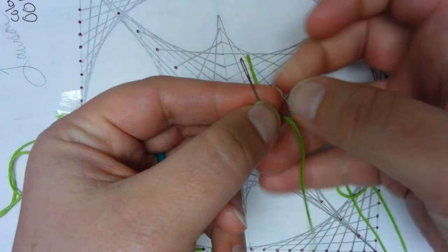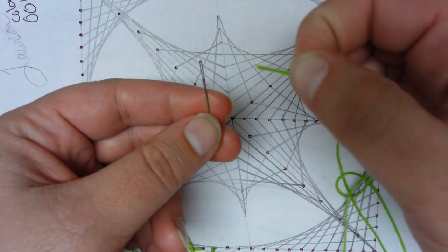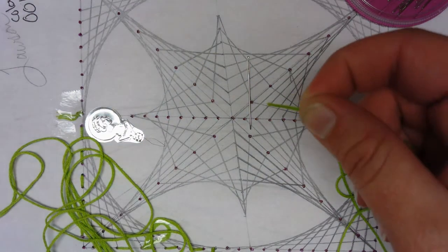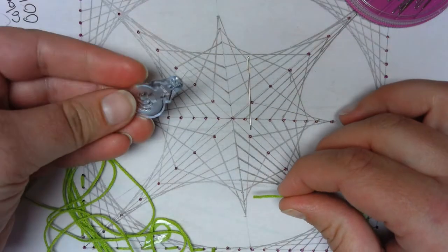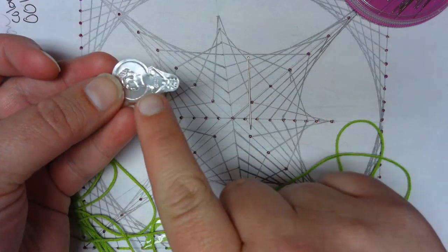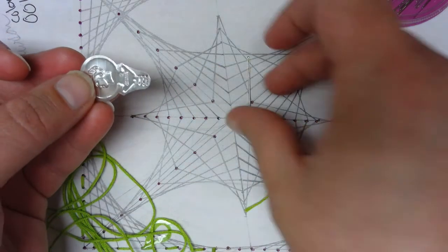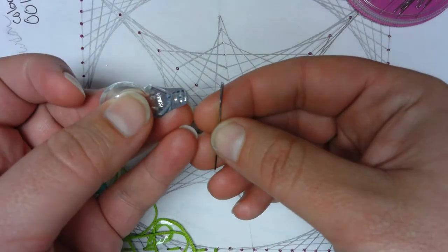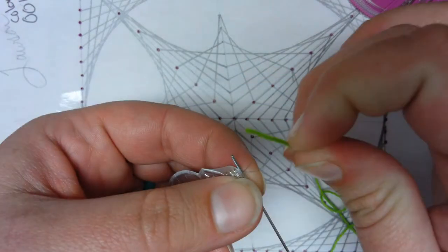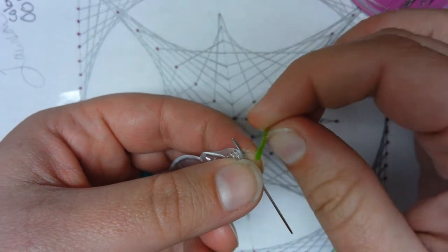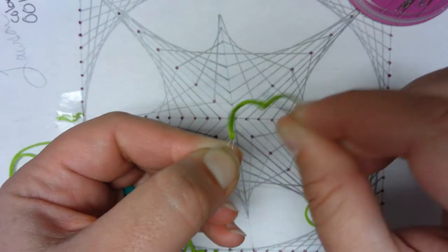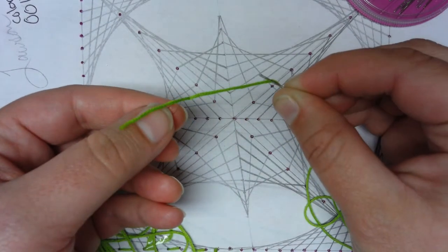To thread your needle, that's what it's called when you put the thread through, you can do it a few different ways. You can either use a needle threader, these little guys. It's a little thin piece of fragile metal with a little wire at the end. It's fairly easy to use. You stick your wire through the eye of the needle, stick your thread through the wire, and then pull your little wire back through the eye of the needle.